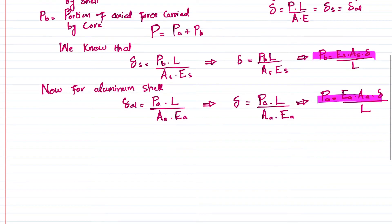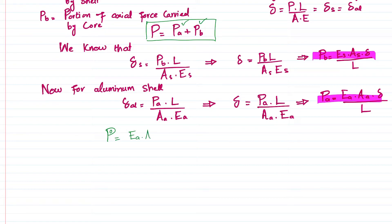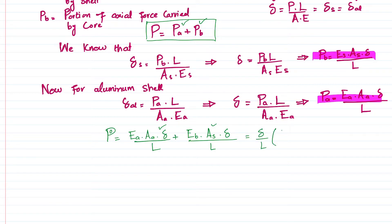Substituting both expressions into the equilibrium equation P = Pa + Pb, we get: P = (Ea·Aa·δ/L) + (Es·As·δ/L). Factoring out δ/L: P = (δ/L)·(Ea·Aa + Es·As). This can also be written in terms of strain, since δ/L = ε (strain), so P = ε·(Ea·Aa + Es·As).